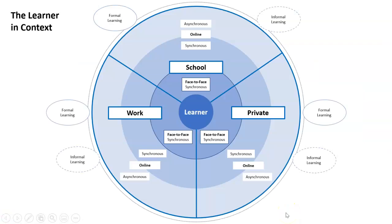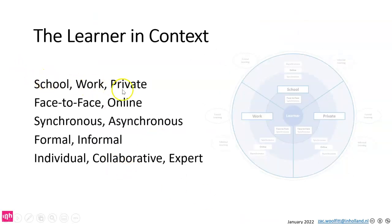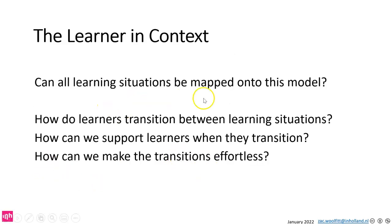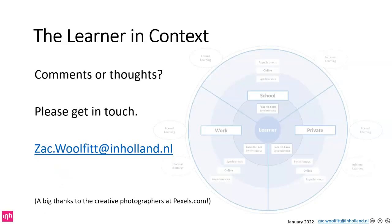So those are the three main elements. Here's the original model — and what I'm interested to know is: does this cover it all? Does this cover all learning? Please let me know whether you think it does, or whether there are things we can add or modify. I've covered school, work, and private environments; face-to-face and online; synchronous and asynchronous interactions; formal and informal learning; and learning as an individual, collaboratively, or from an expert. Can all learning situations be mapped onto this model? How do learners transition between learning situations, and how can we support and make those transitions effortless? Let me know your comments and thoughts. I'd also like to give a big thanks to the creative photographers at Pexels for their wonderful images.